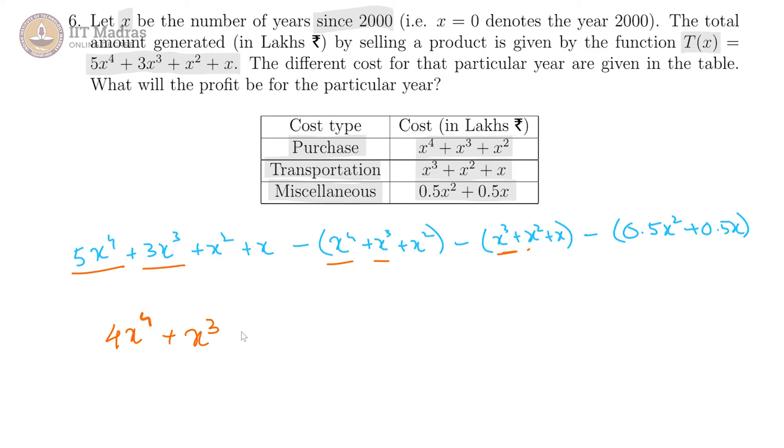And x^2 terms there are 4, there is this x^2 and then there is minus x^2 and another minus x^2 and minus 0.5x^2. That will give us minus 1.5x^2 because this and this cancels off and then we get minus 1.5x^2.